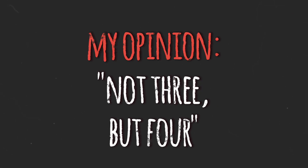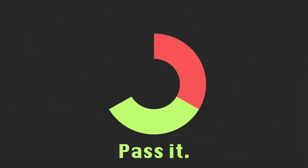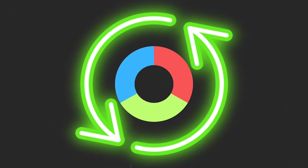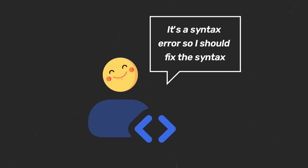TDD has four central parts. You need to make a list of assumptions and requirements for the feature you are about to build. Red means to pick a test from those requirements and fail it intentionally. Green means to pass that test using the minimum required changes. The last part is refactoring that code so that it is clean and the tests still pass. Then write another test and repeat the process until all your requirements from the list are met. The goal of TDD is to make you fall in love with failing tests — use the failing test as constructive feedback and implement it in your code to make the test pass.